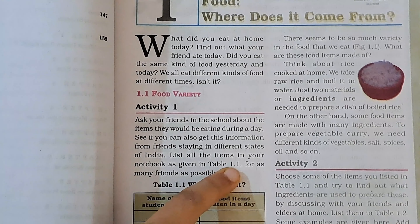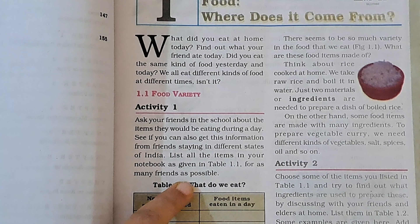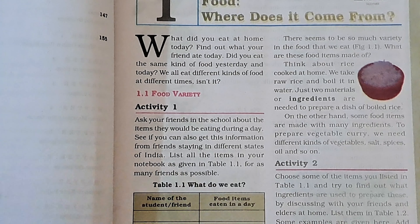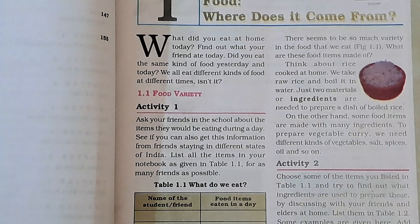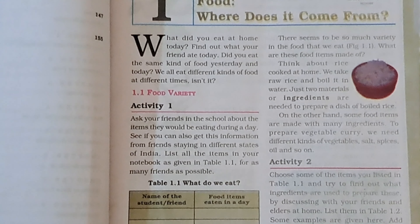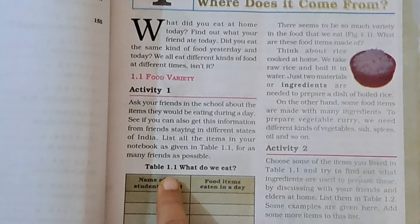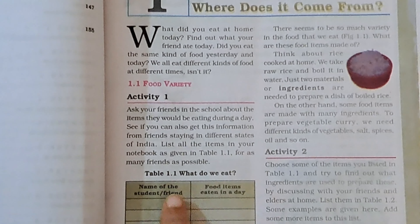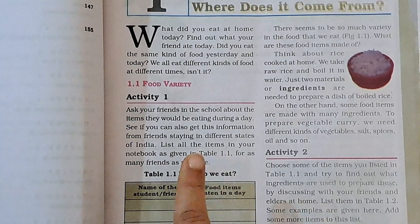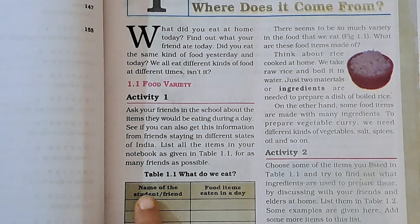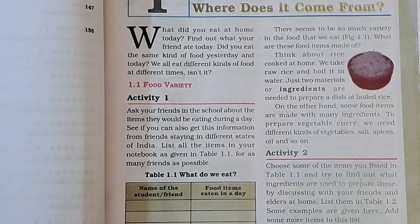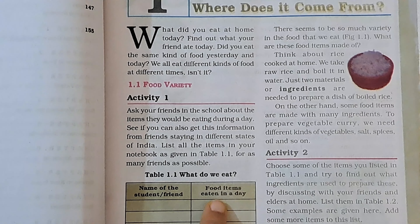List all the items in your notebook, jaisi Table 1.1 mein dikhaaya gaya hai, for as many friends as possible. Prepare a table with your friends — name of students or friends in one column, the food item eaten in another column, and what the food item is made of in another column.